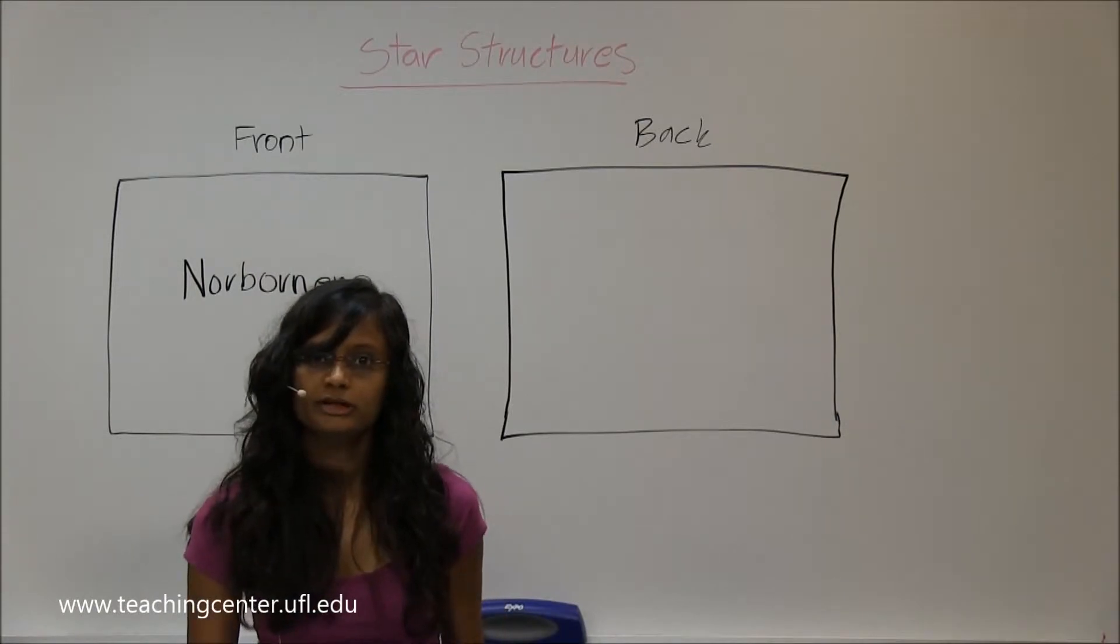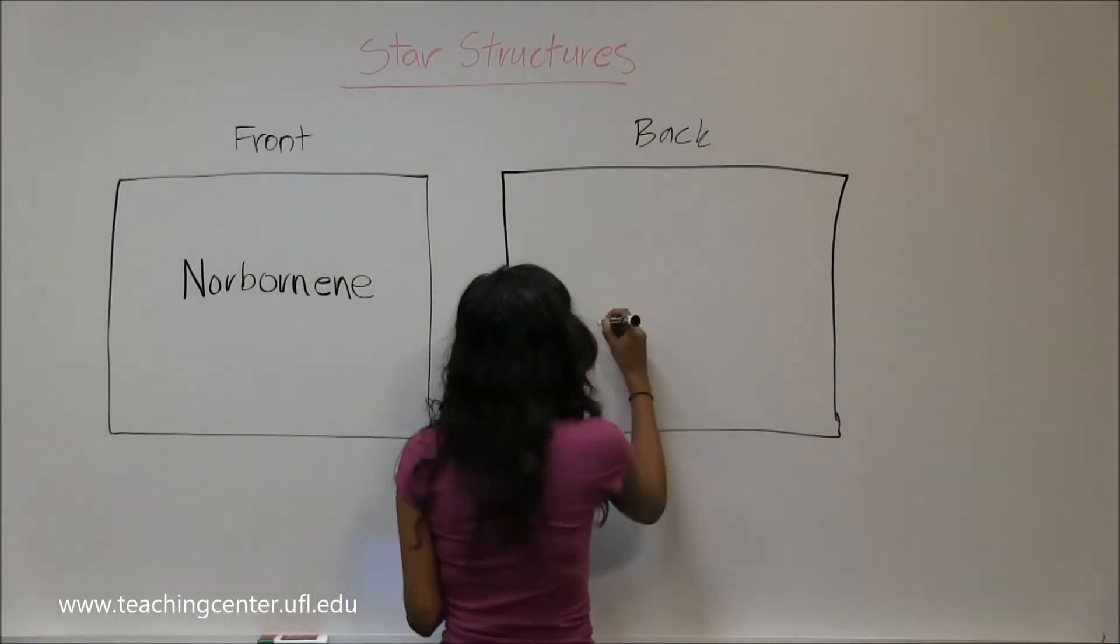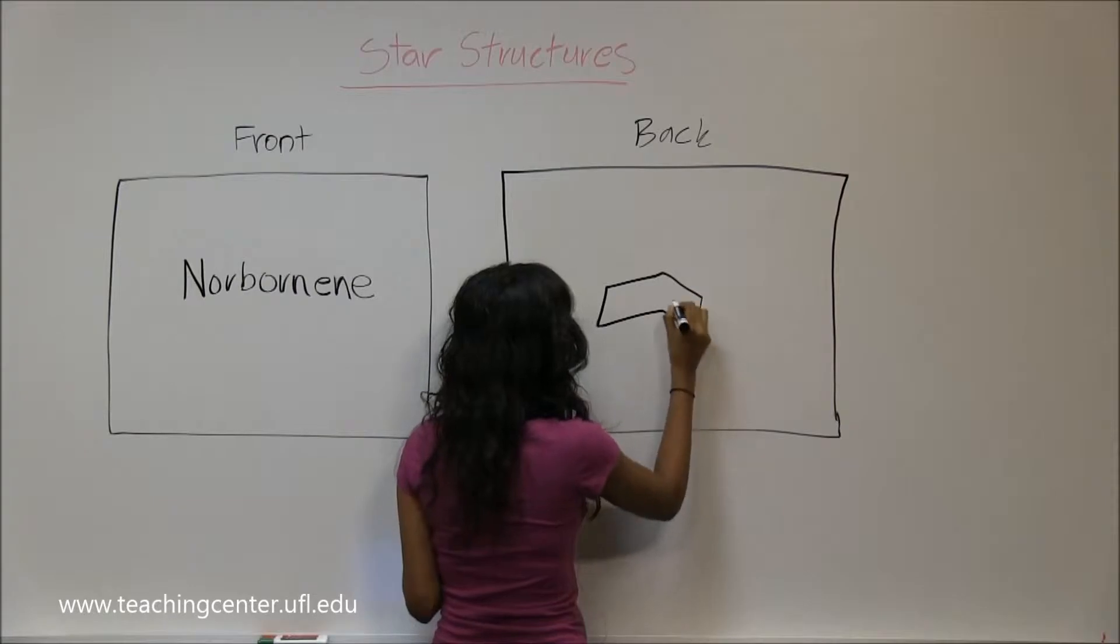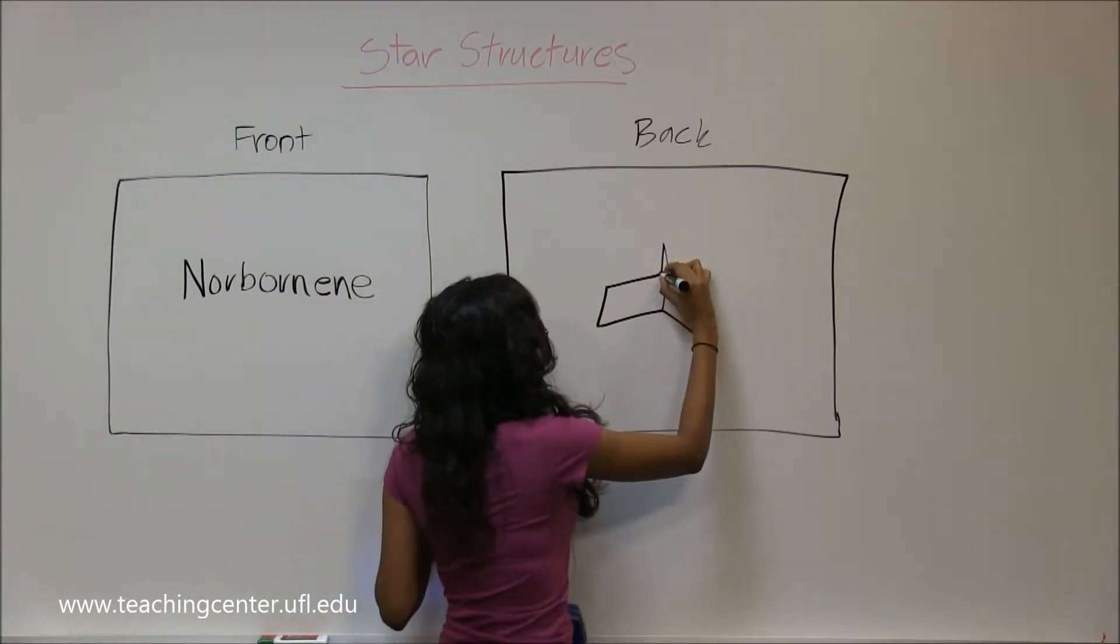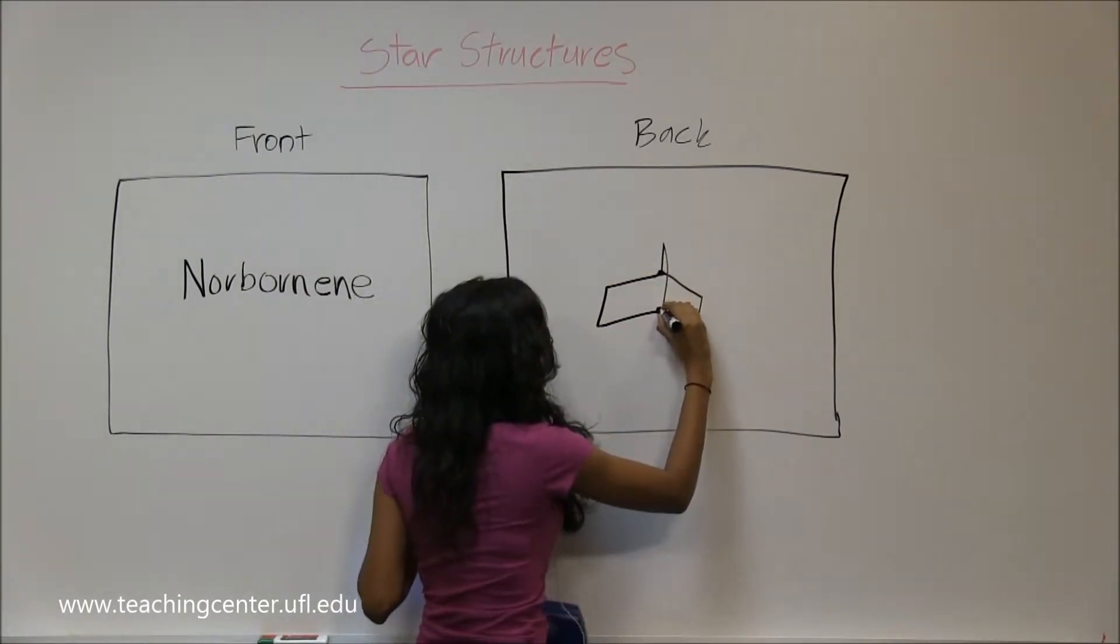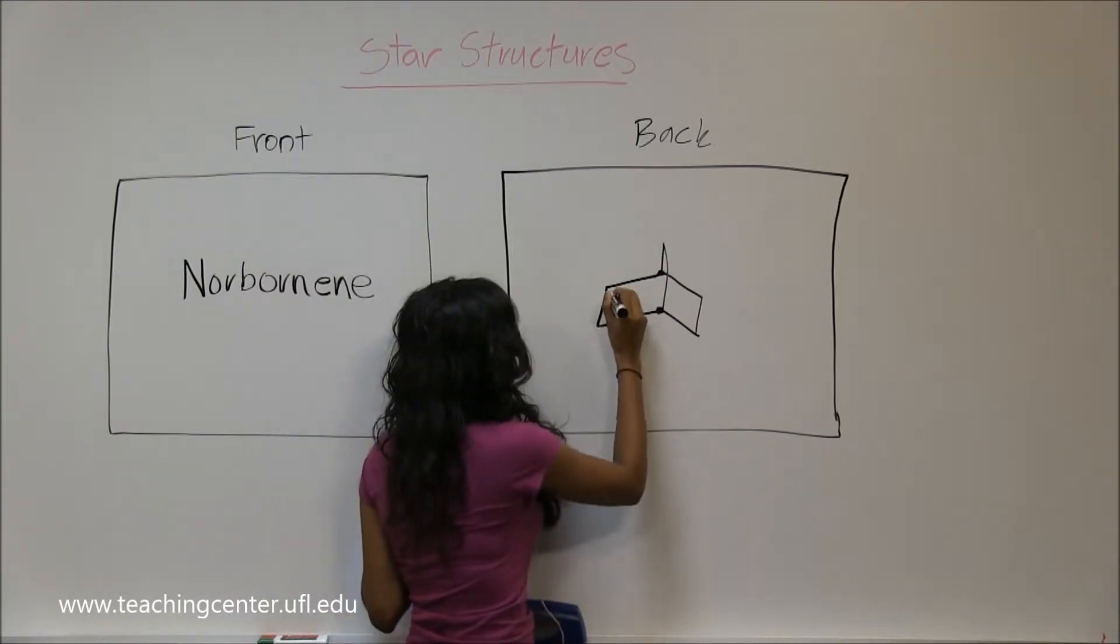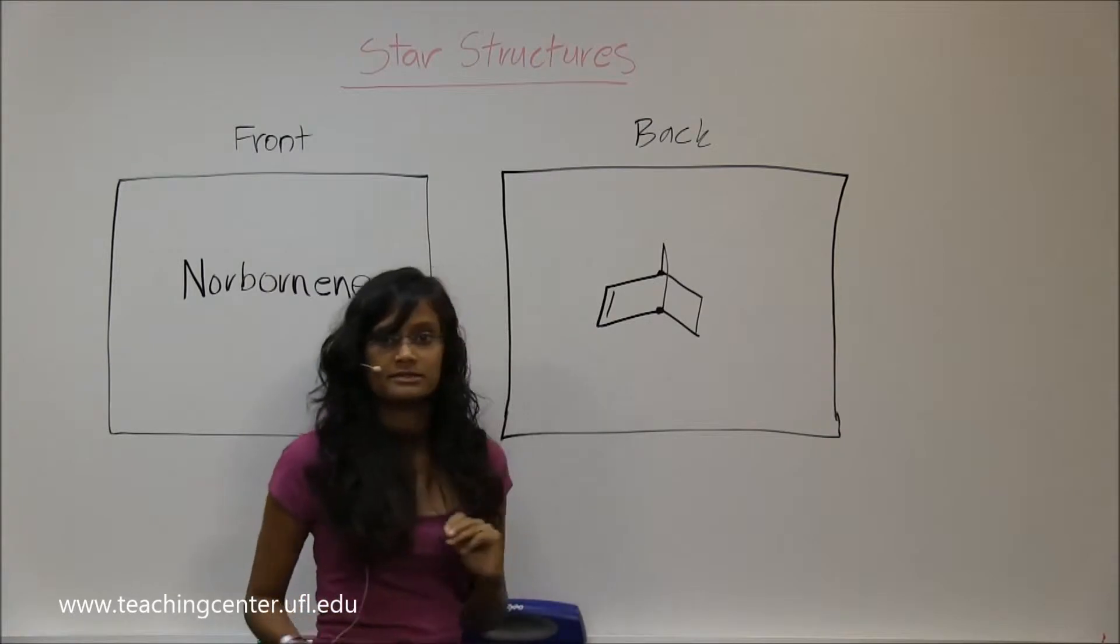All right, norbornene is another bicyclic compound where you have a carbon that's attaching to your bridgehead carbons as well, and it means you have a pi bond somewhere down there.